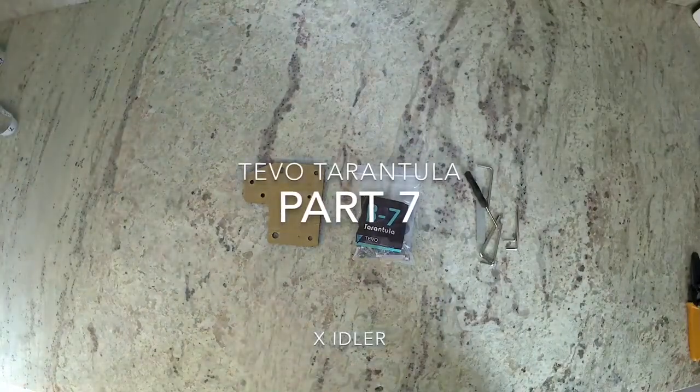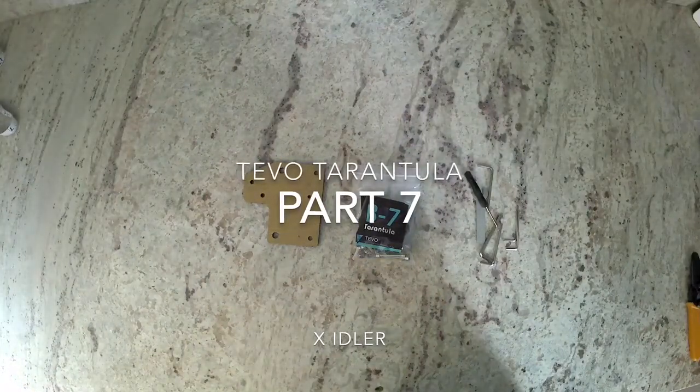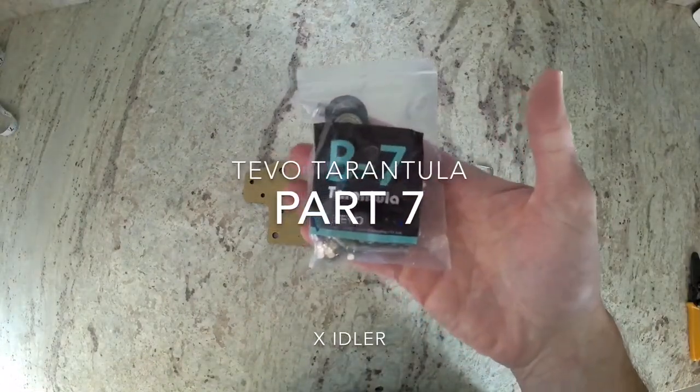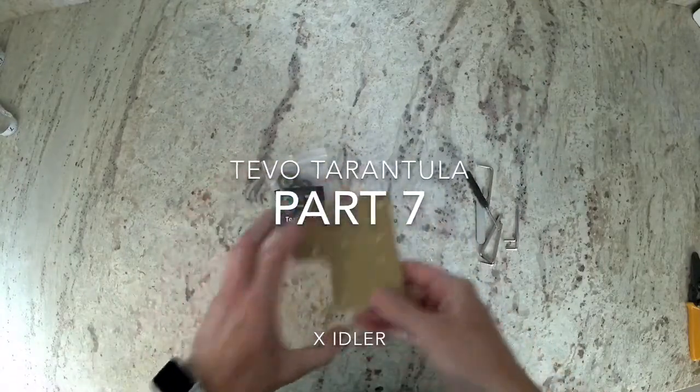Hello, this is Colin with Maker Farm. In this video we're going to do the X Idler on the TiVo Tarantula. To start you're going to need your tool bag, you're going to need bag B-7, and then you're going to need this acrylic piece.